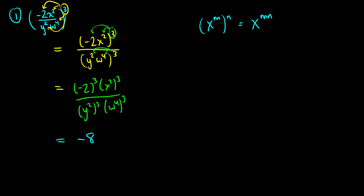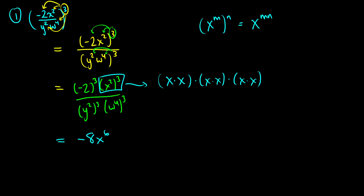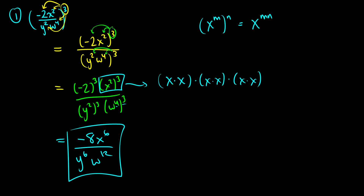For x squared cubed: that's x times x, done three times, giving us six x's total — so x to the sixth. On the bottom, y squared cubed: 2 times 3 gives y to the sixth. And w to the fourth cubed: 4 times 3 gives w to the twelfth. So our first solution is negative 8x to the sixth over y to the sixth times w to the twelfth.